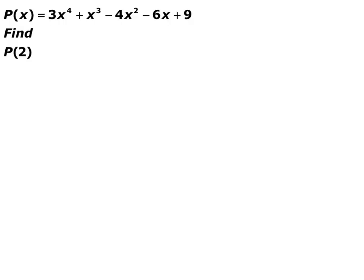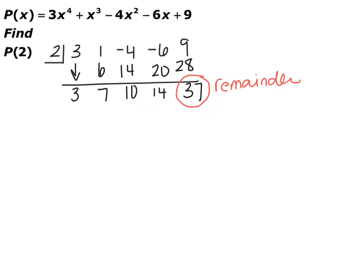Now we're going to use synthetic division to find p of 2. In the past, we would have had to plug 2 in for every x value and do a bunch of arithmetic. Now you can just do synthetic division. Put 2 inside the box and the coefficients outside. I have a degree 4, which means I need 5 numbers outside. Go ahead and pause the video and complete the synthetic division. When you finish, you should end up with a remainder of 37 — meaning that if you had plugged 2 into the function, you would have gotten 37.